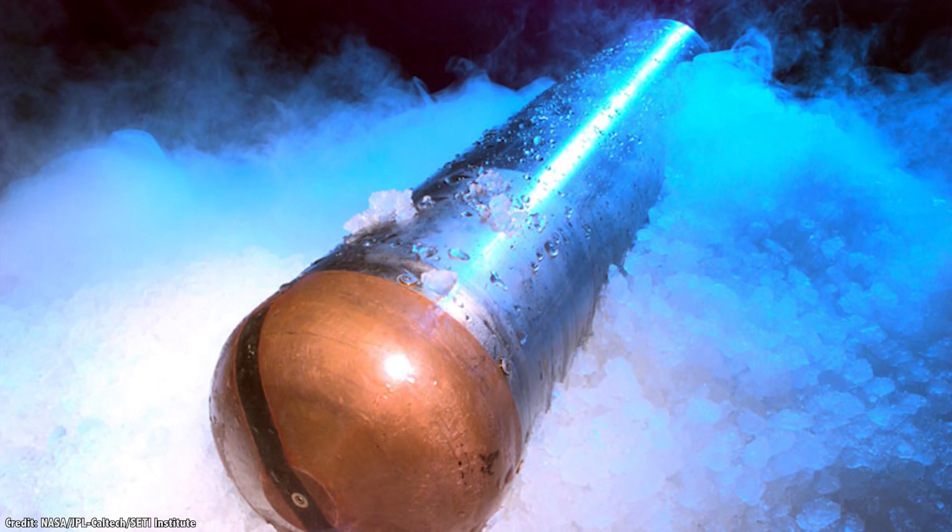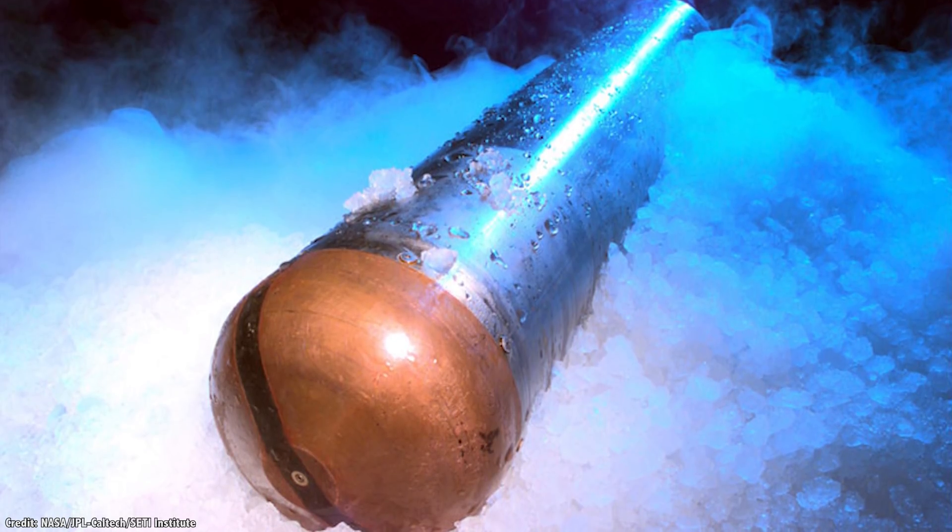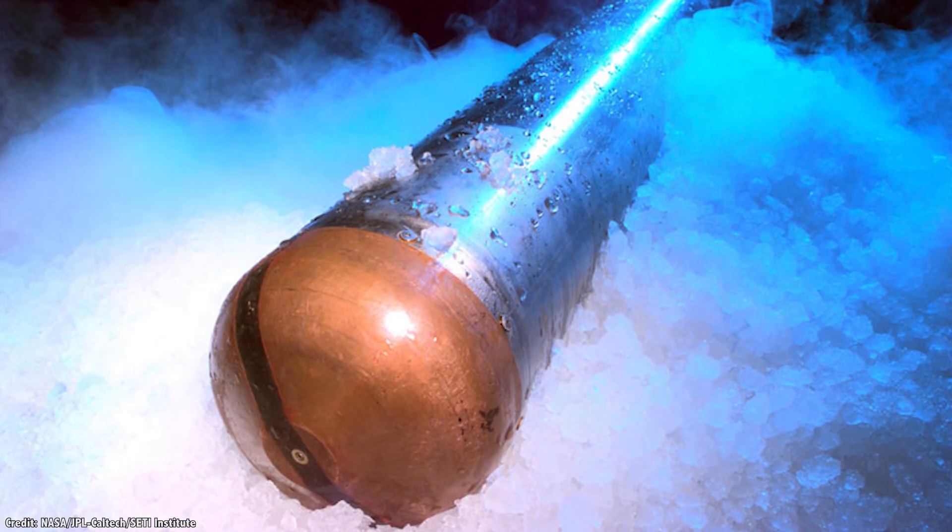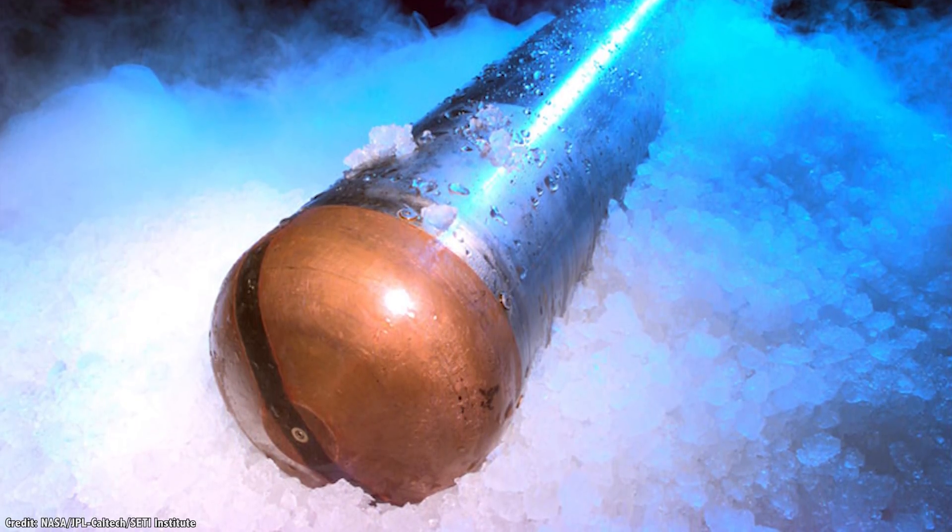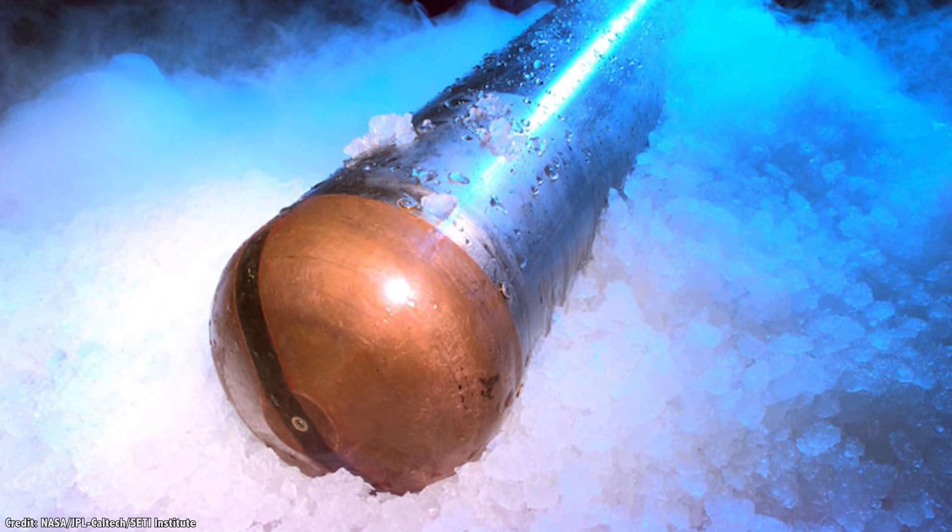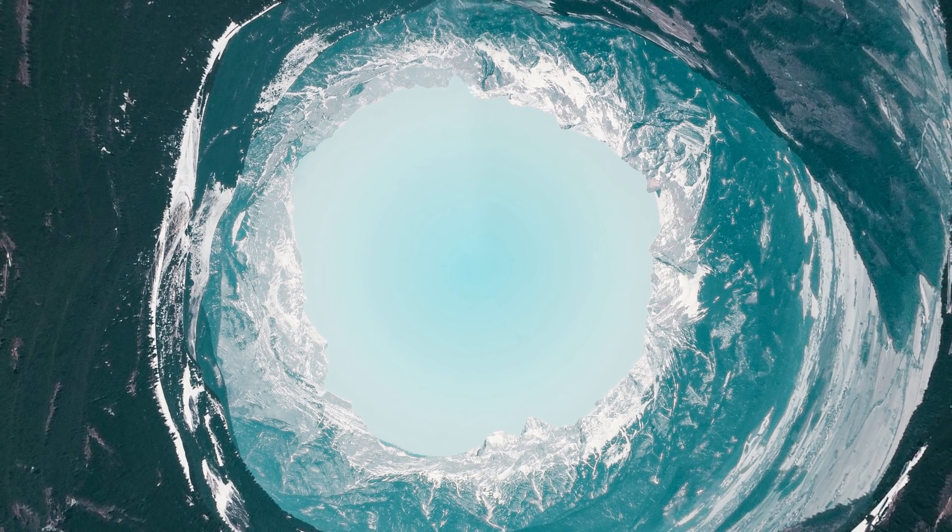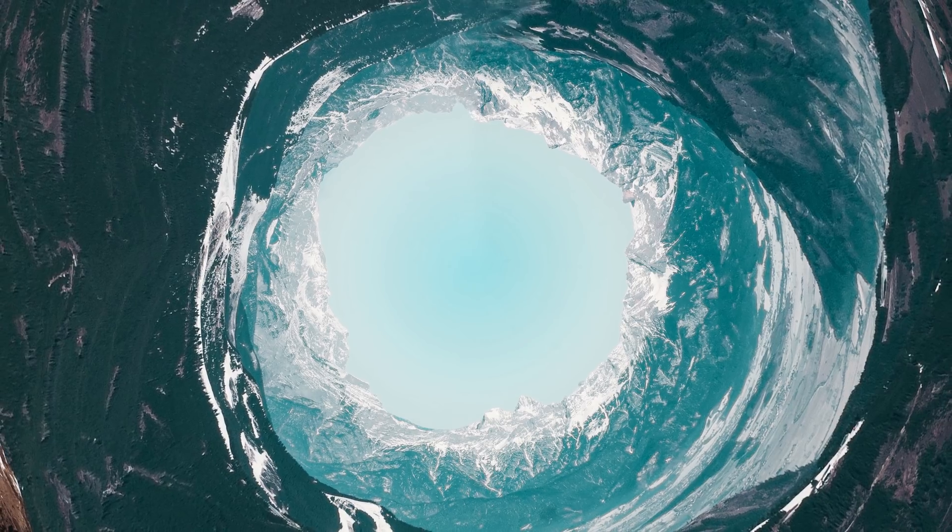Each lander would deploy a cryobot, which would be equipped with either a fission reactor, like the 30 or so space missions launched by Russians, or a radioisotope heating unit, or RHU, a massive decayed isotope. This would concentrate the heat at the tip of the melt probe, creating a thick layer of meltwater around it. And then the probe would slowly sink into the ice by gravity.